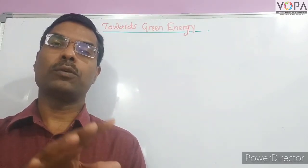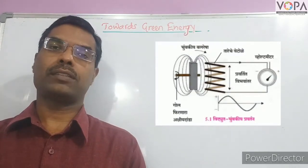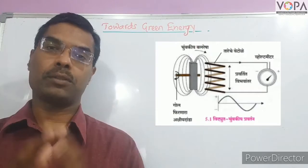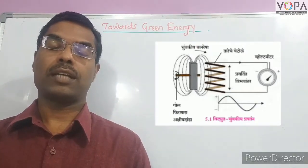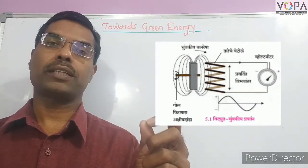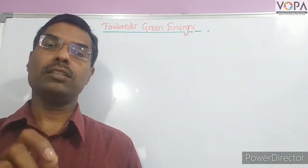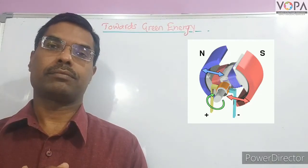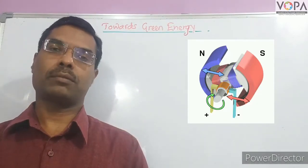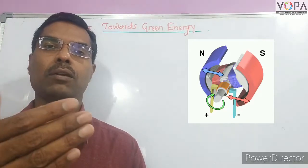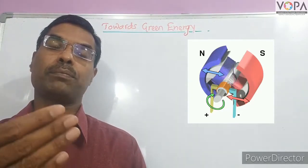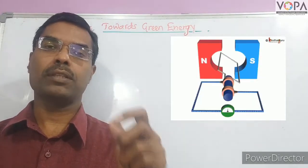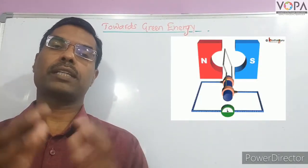The magnet is the same and the wire is the same. The electrical energy is produced, and this concept is called electromagnetic induction — the change in the magnetic field around the current-carrying conductor produces the electrical energy in that conductor.